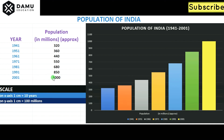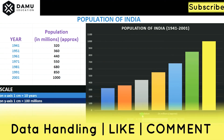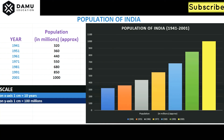We have to construct a bar graph for this. First, take a graph sheet and mark the x-axis with years, using one centimeter for a 10-year gap. On the y-axis, take 100 millions per centimeter. Each year is shown in a different color — blue for 1941, orange for 1951, gray for 1961.